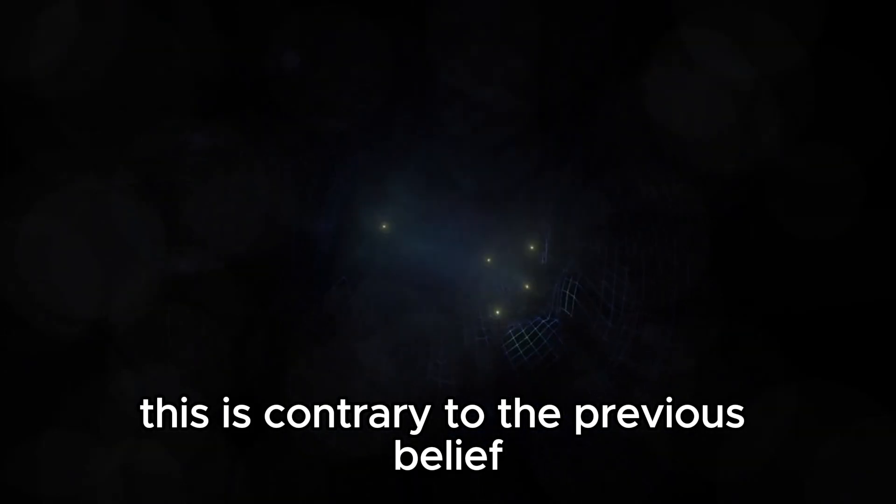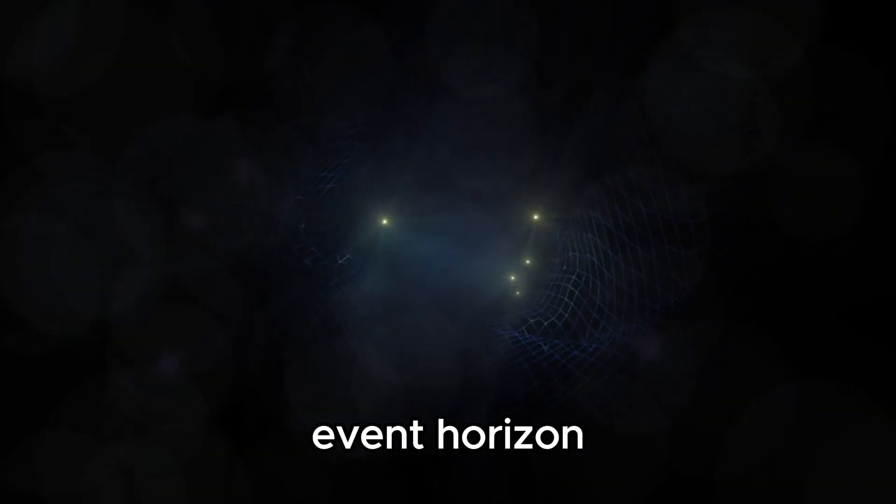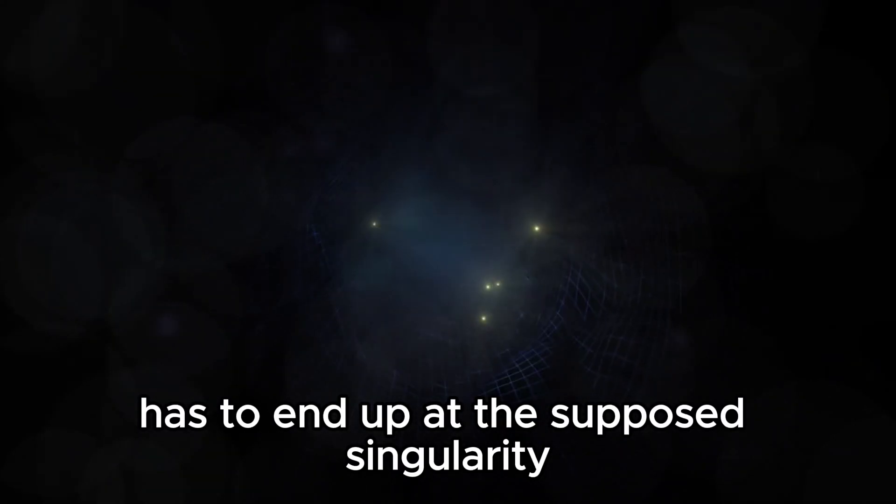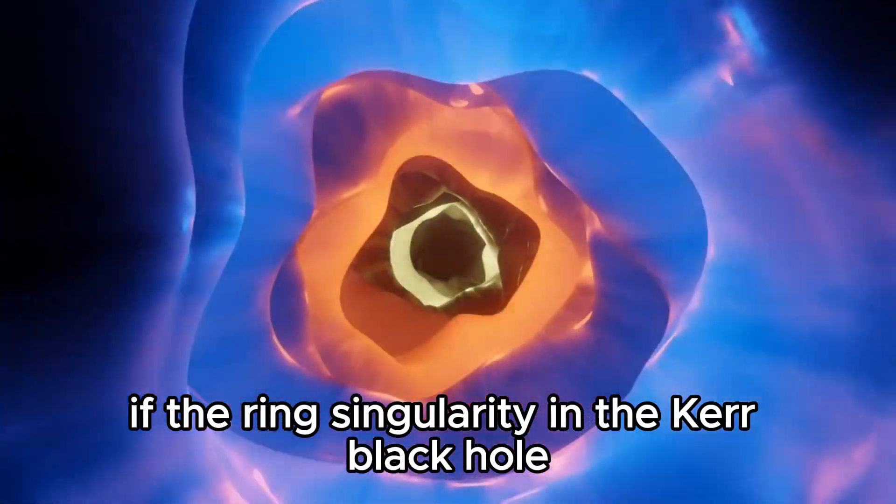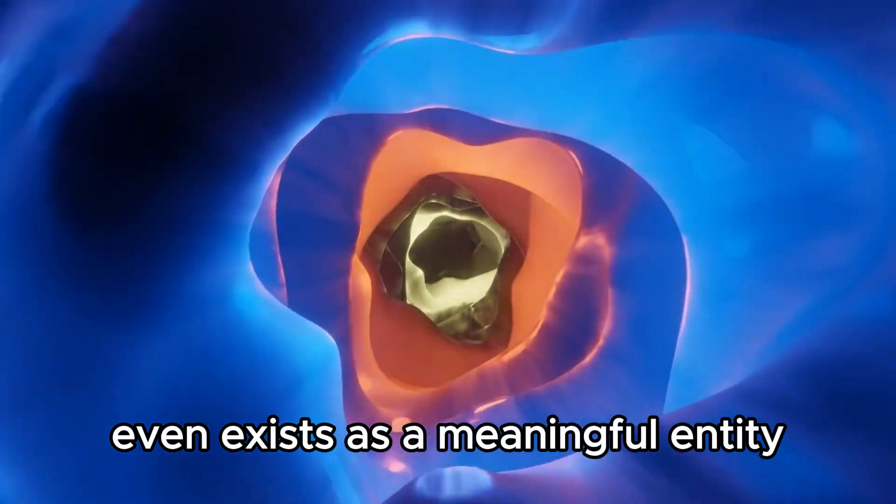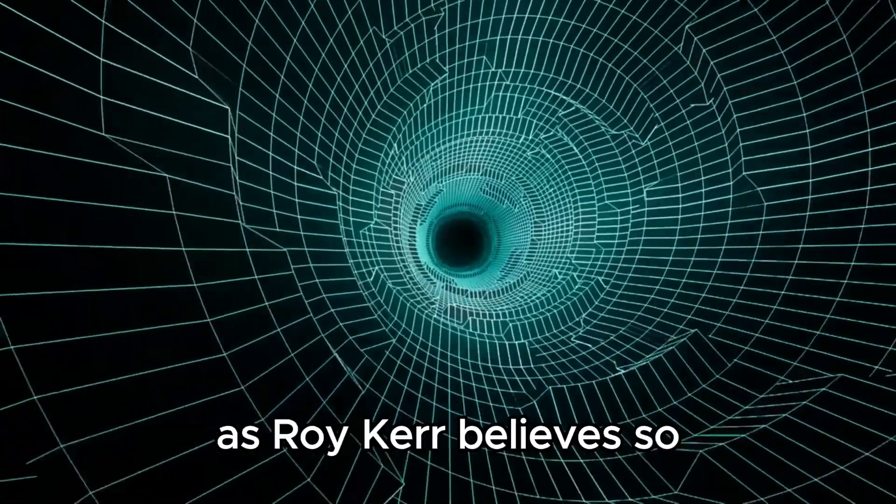This is contrary to the previous belief that light crossing any black hole's event horizon has to end up at the supposed singularity at the center. That is, if the ring singularity in the Kerr black hole even exists as a meaningful entity rather than a mathematical convenience, as Roy Kerr believes.